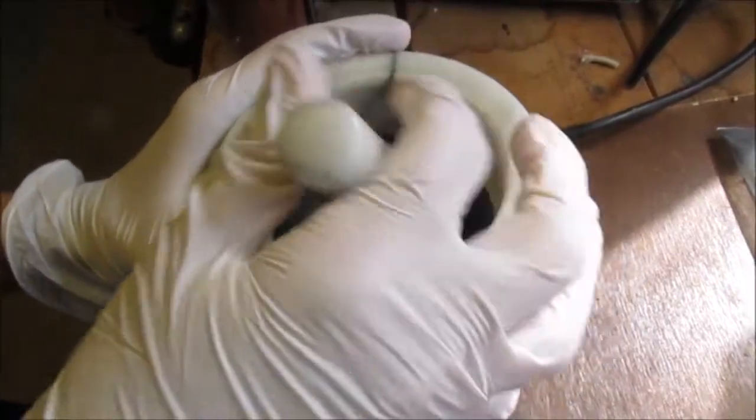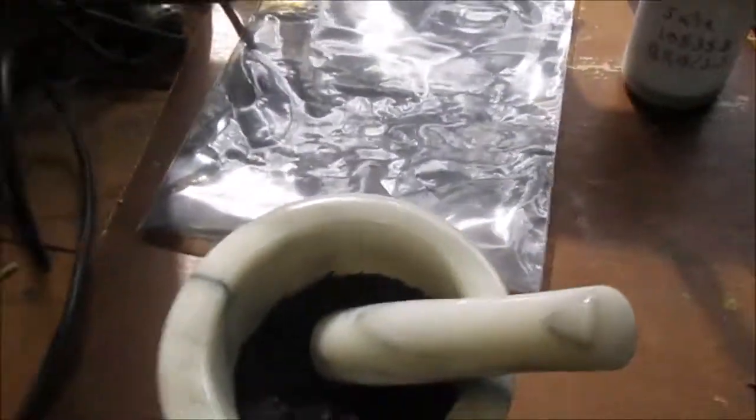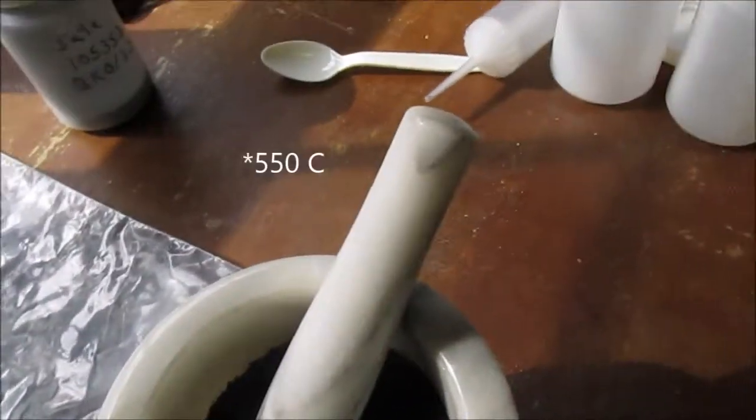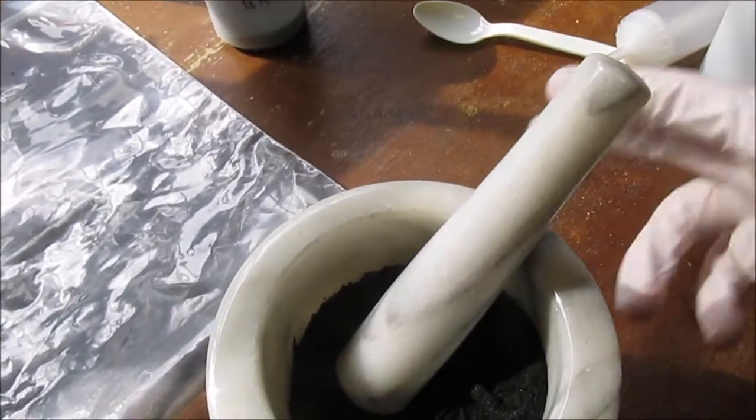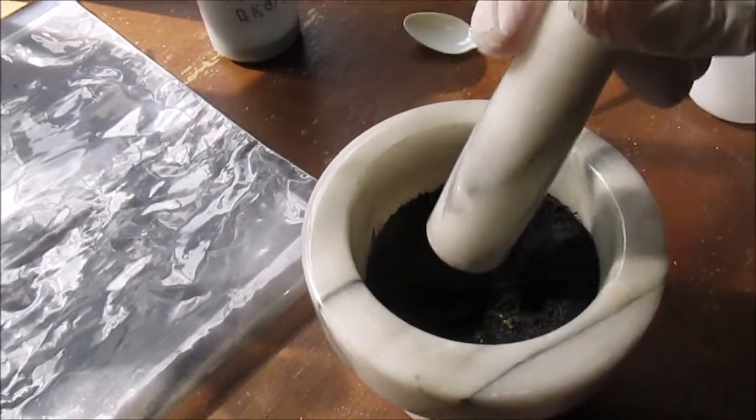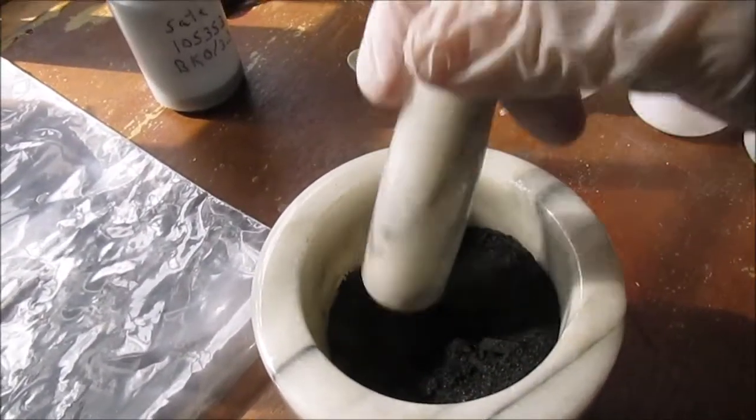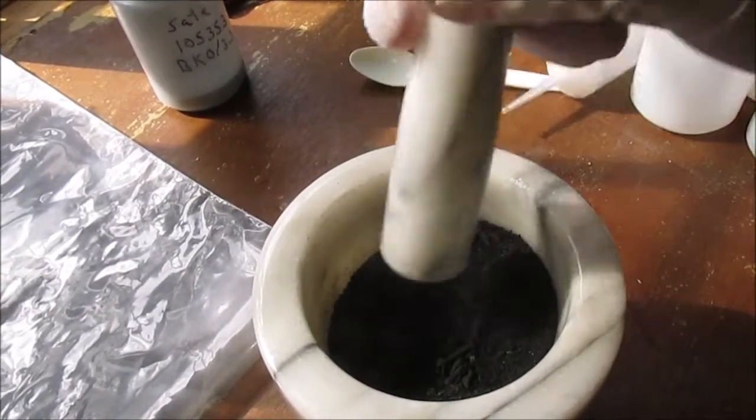So this activated carbon was produced in a nitrogen gas furnace at about 500 degrees celsius. There's approximately 200 grams of material here, or there was at least 200 grams of compost before it was burned, so now there's definitely a lot less.